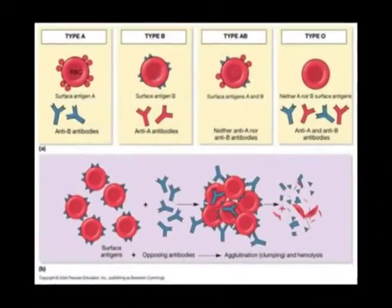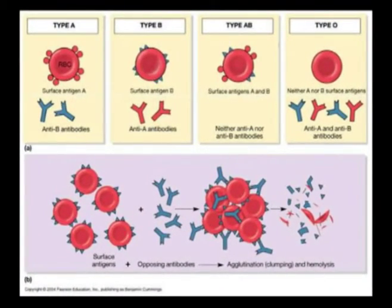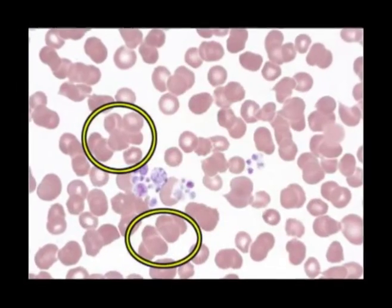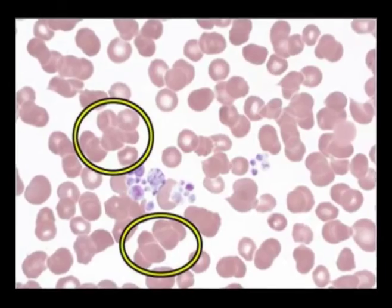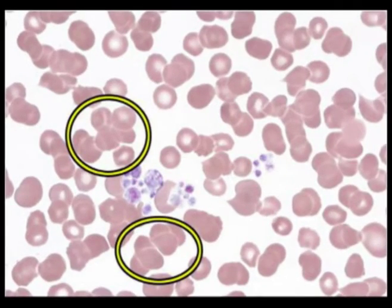Sometimes, when the blood of two people is mixed together, it clumps or forms visible islands in the liquid plasma. The red cells become attached to one another, and this is known as agglutination. When different types of blood are mixed within the body, the reaction can result in bursting of the red cells, as well as agglutination.